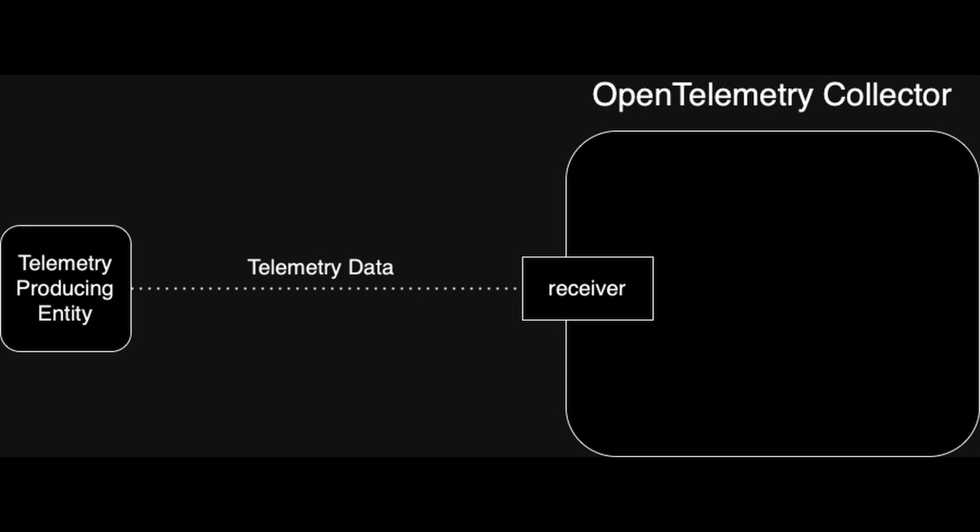Let's break down the components to see how that actually works. First up are receivers. Picture the Collector as a black box — the receiver is the way telemetry signals, that's metrics, logs, traces, and events, get into the Collector from a telemetry-producing entity. There are two ways of getting this data: push or pull. In the push model, data is pushed to the Collector. In the pull model, the Collector reaches out to an endpoint and pulls the data back in.